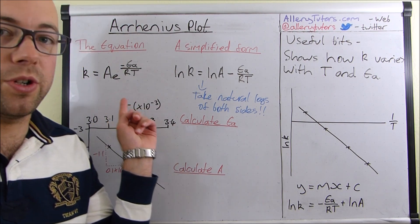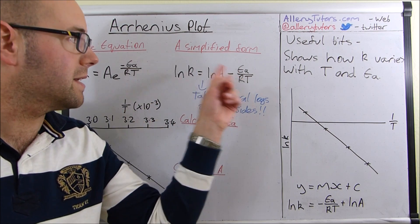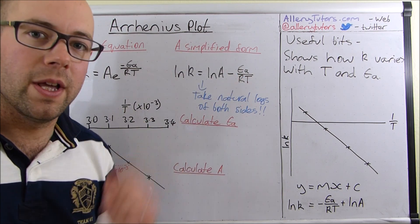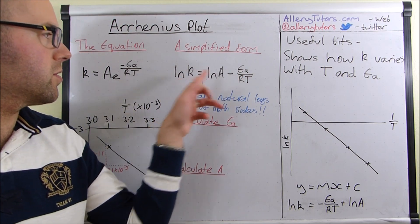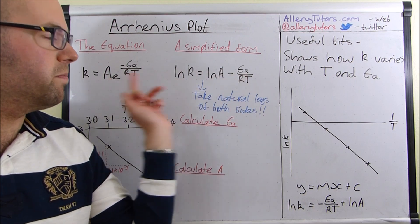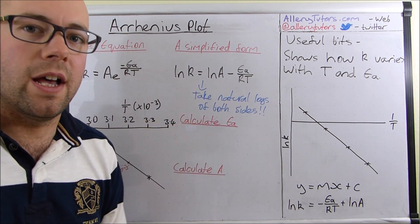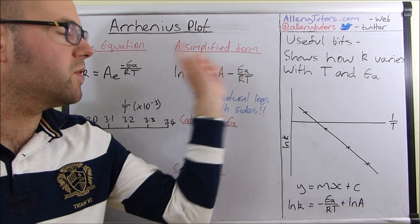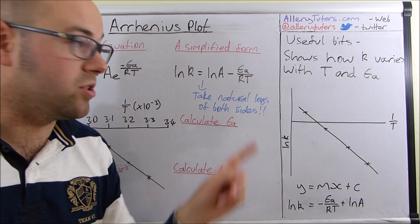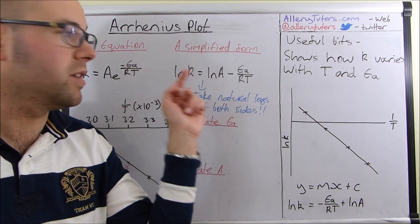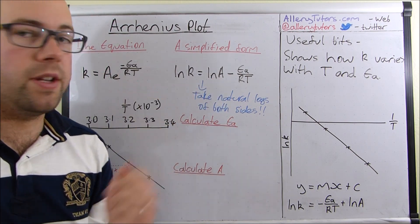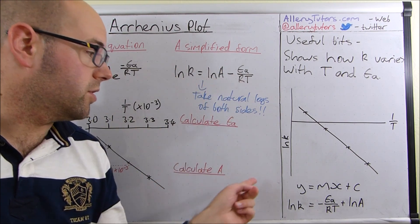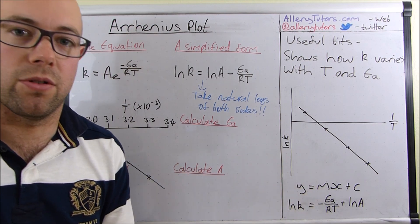So this is the equation we're going to use, but we can simplify it into another form by taking natural logs on both sides. We get a more simplified version of the equation, and this is the one we're going to be using rather than the original one, mainly to work out your graphs.